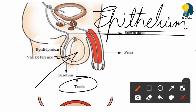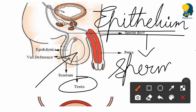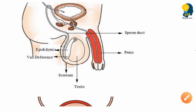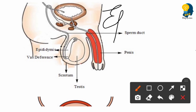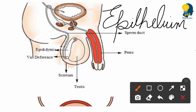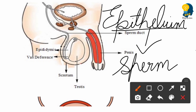The testes consist of many coiled tube-like structures lined by epithelium cells. As the epithelium divides, the sperms are being formed. So the sperms are produced as the epithelium tissues or epithelium cells divide inside these coiled tube-like structures within the testes.